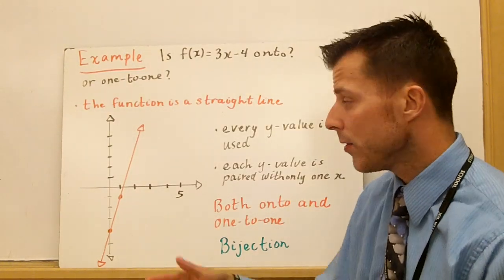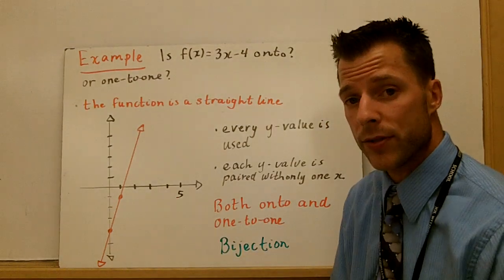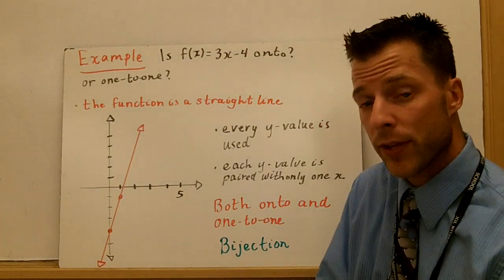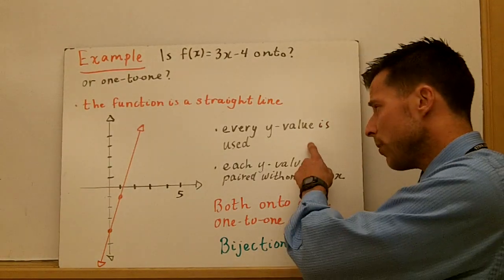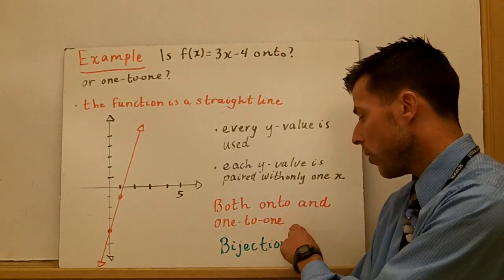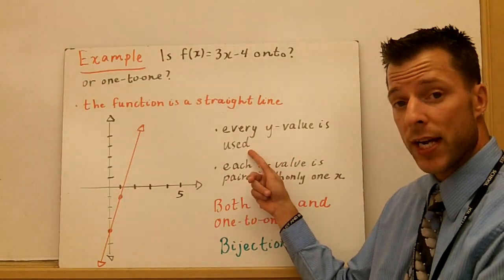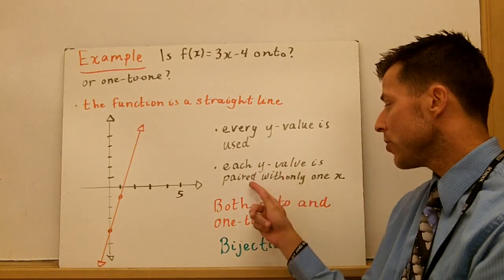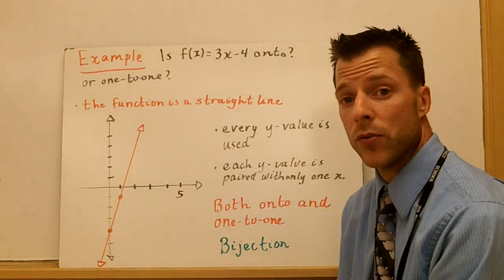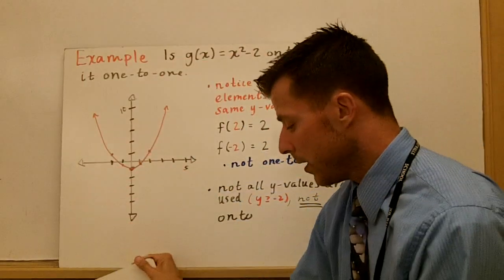Onto functions, well, the domain and range of linear equations are all real numbers for both, domain and range. So every y is going to be paired with an x. So this function is both one-to-one and onto, and we call that a bijection, when you're both one-to-one and onto. So again, every y value is used. There's your onto function. Each y value is paired with only one x, a different x. There's your one-to-one definition.